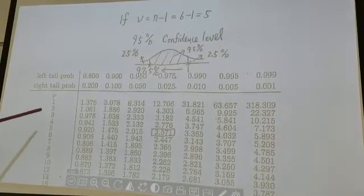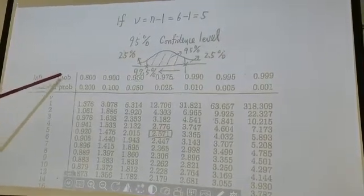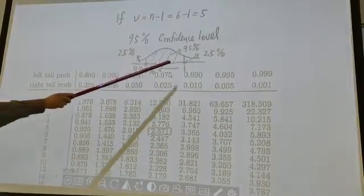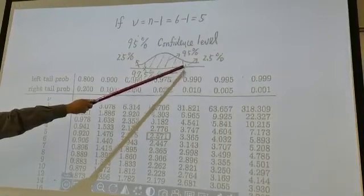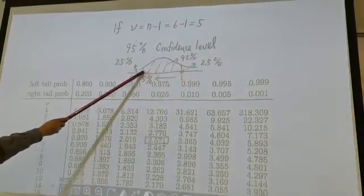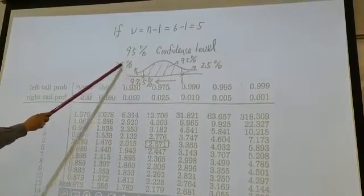Okay, left tail probability, right tail probability. This is what? For this number here, upper tail is 2.5 percent. Here, the left tail is 2.5 percent.